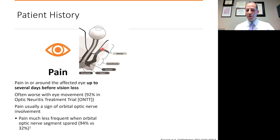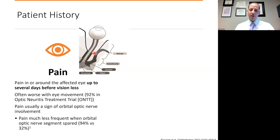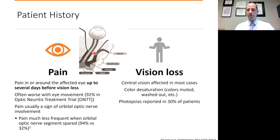If we divide the optic nerve into an orbital segment — the part in the orbit — a canalicular segment through the optic canal, and an intracranial segment between the optic chiasm and optic canal, and we consider all optic neuritis that left out the orbital section, we find that pain was present only about 32% of the time. I bring that up to help us realize that not all optic neuritis involves pain. A vast majority does, but it does not rule out the diagnosis if the patient has painless vision loss. Vision loss is the other cardinal part of the history suggesting optic neuritis.